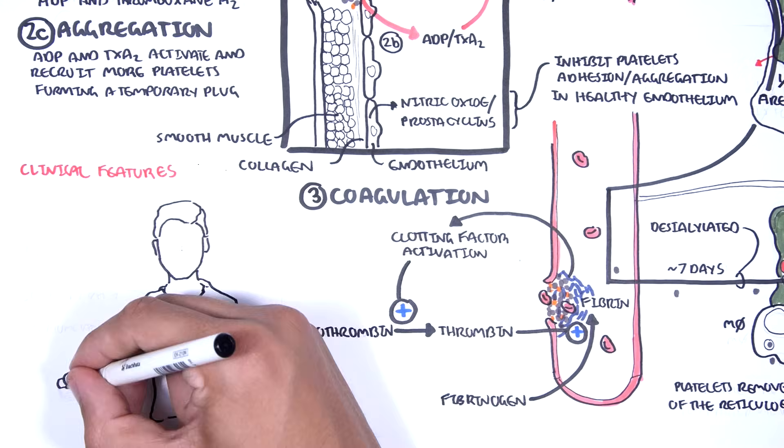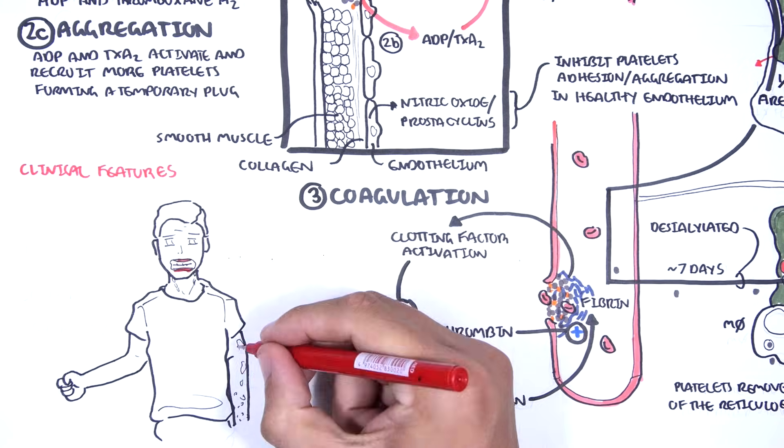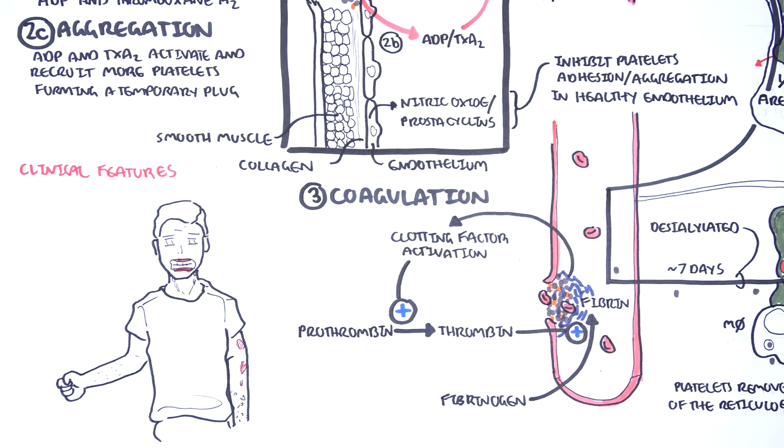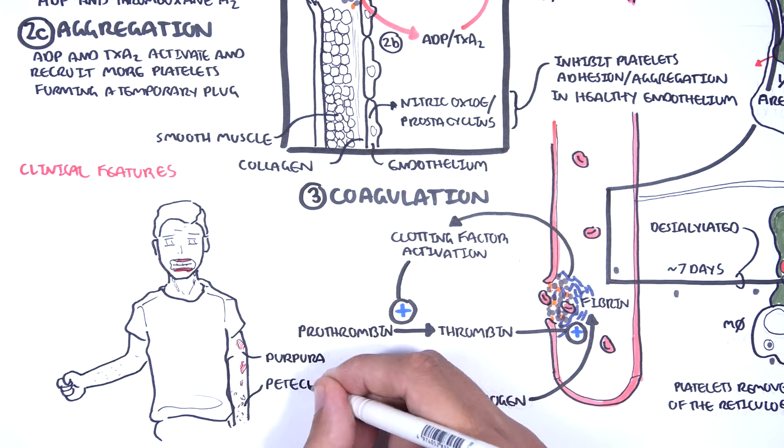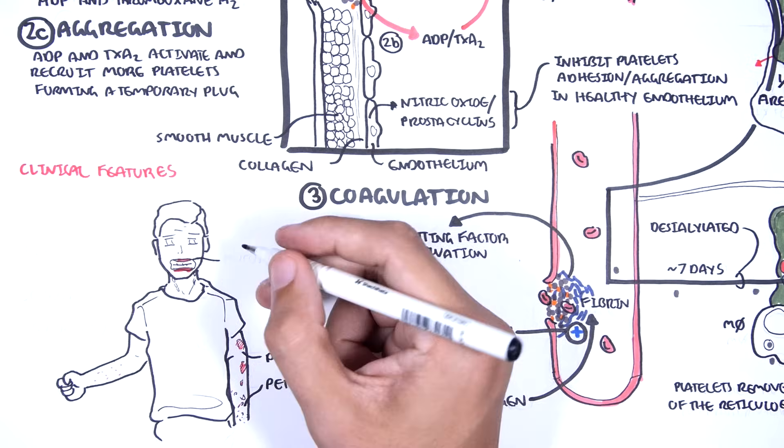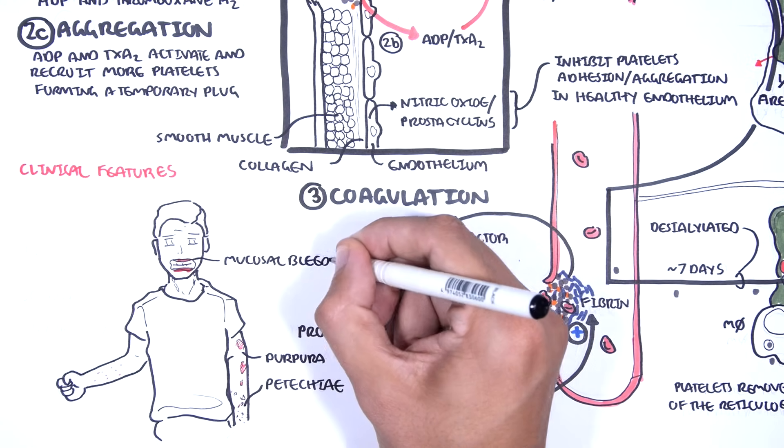Clinical features of thrombocytopenia include skin changes, which are probably the most important finding. These include purpura and petechiae, and mucosal bleeding.